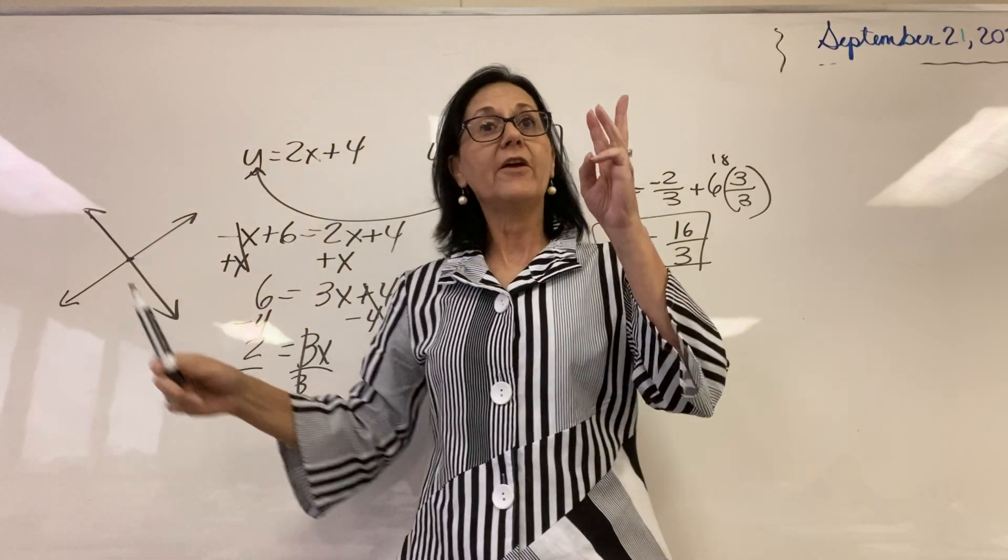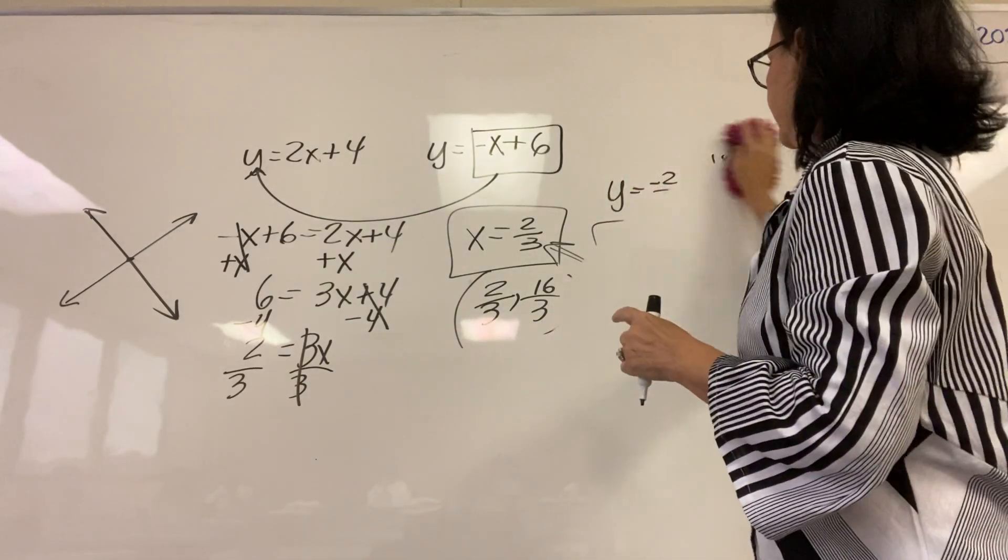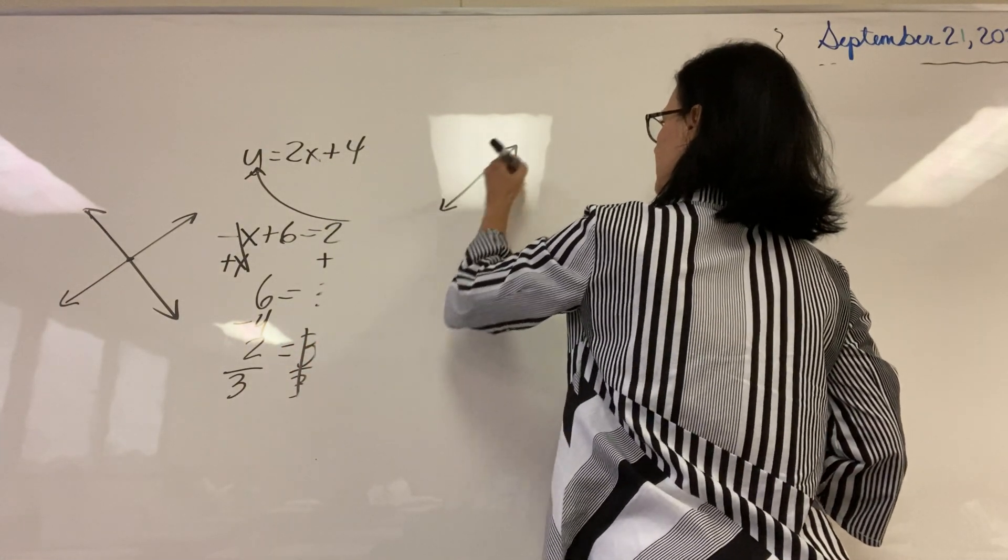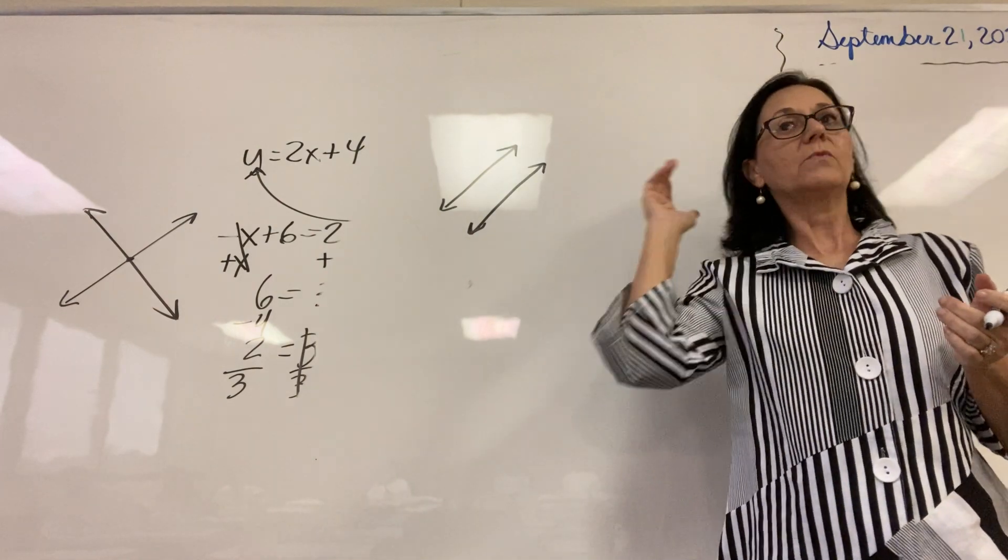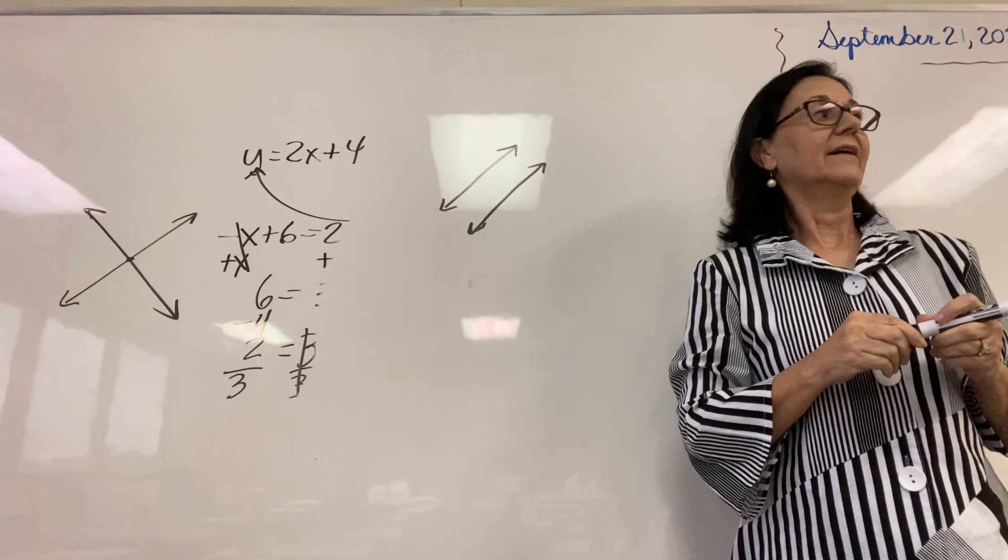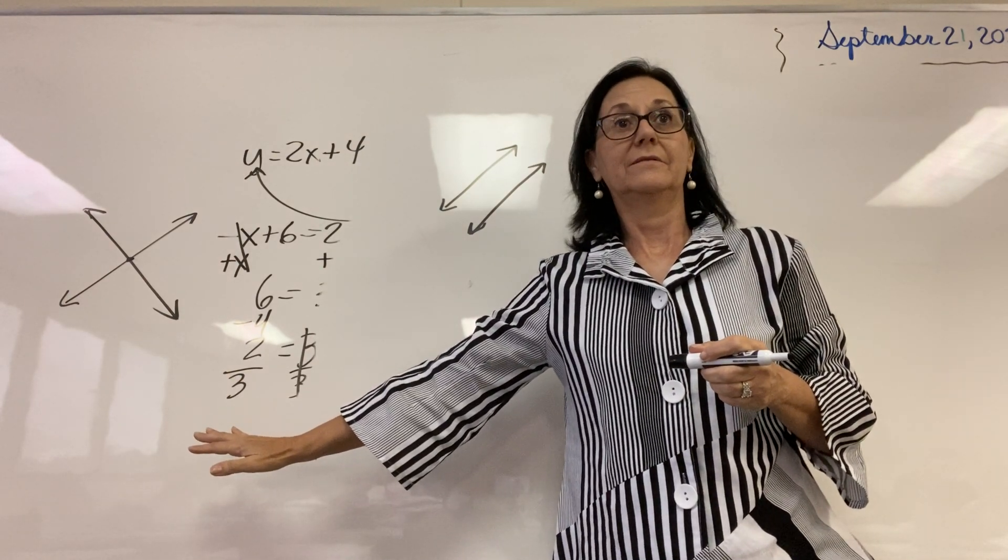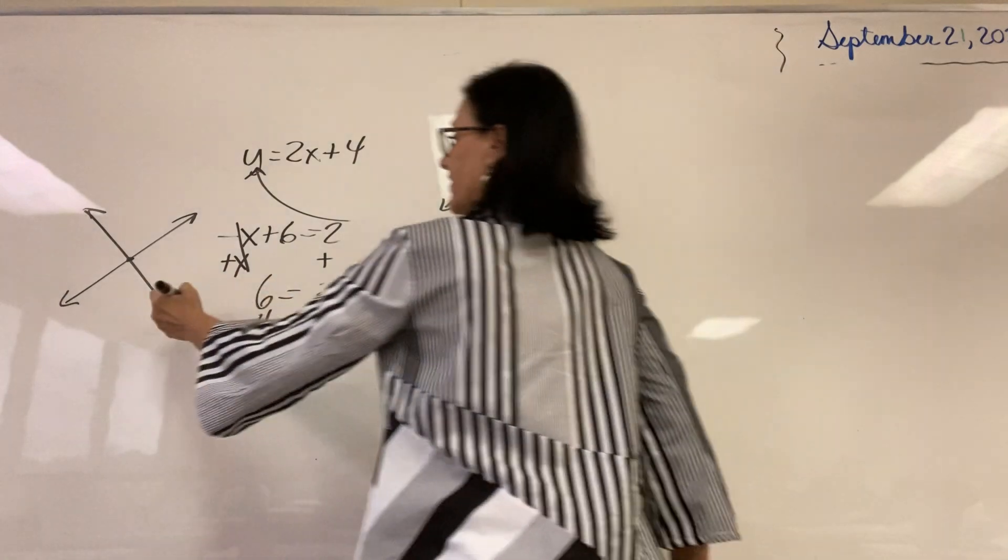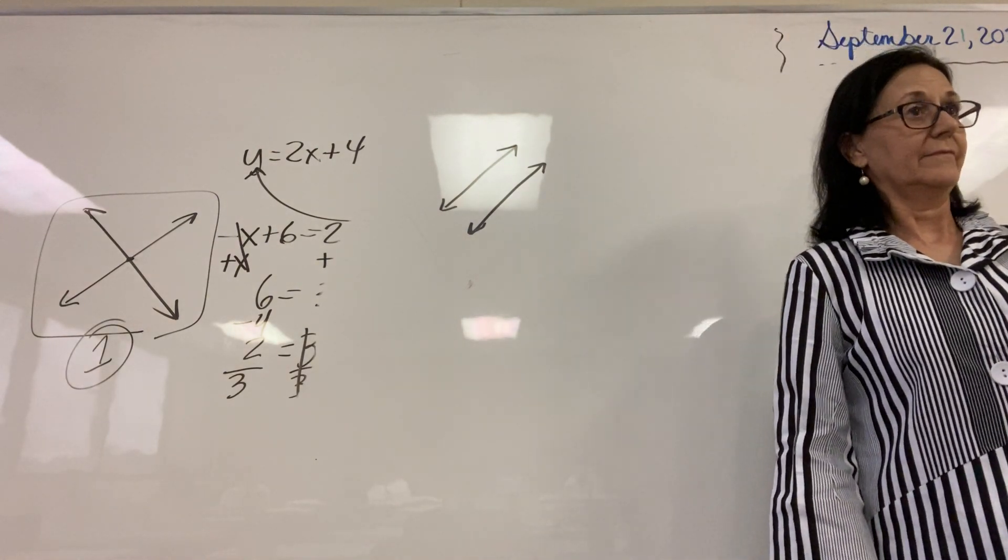Either they have, there are always three options in terms of what points equations have in common. Either equations, two equations graphed look like that, and those are parallel lines. What do we know about parallel lines? They never intersect and they lie on the same plane. So when you use substitution, you're not going to get an answer because they never intersect. Or we're going to have this option where there is one point of intersection, but there's a third option.